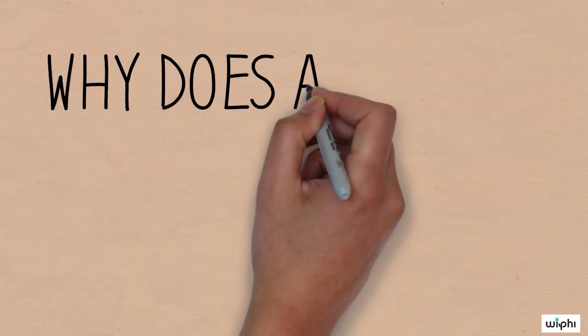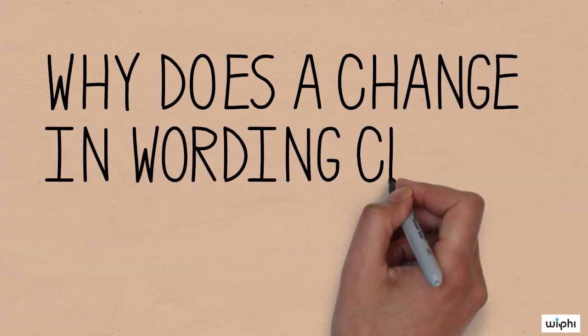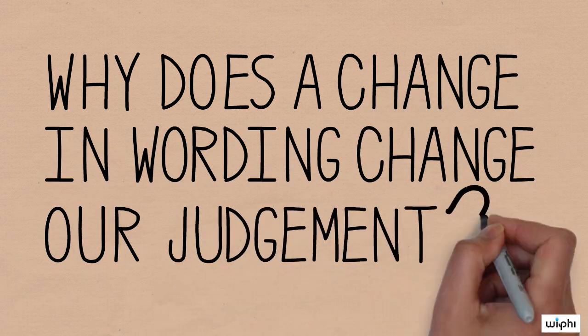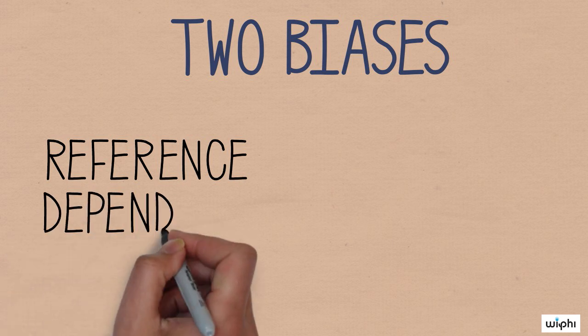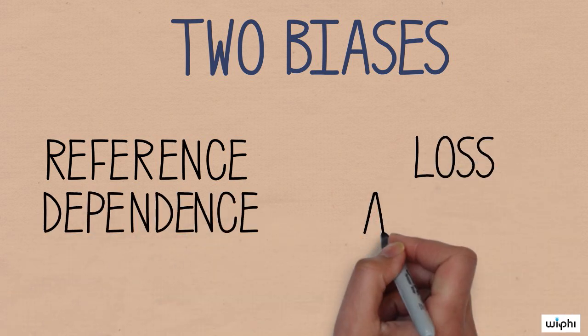Why does a simple change in wording change our judgments about exactly the same options? Kahneman and Tversky figured out that this strange effect results from two classic biases that affect human choice, biases known as reference dependence and loss aversion.